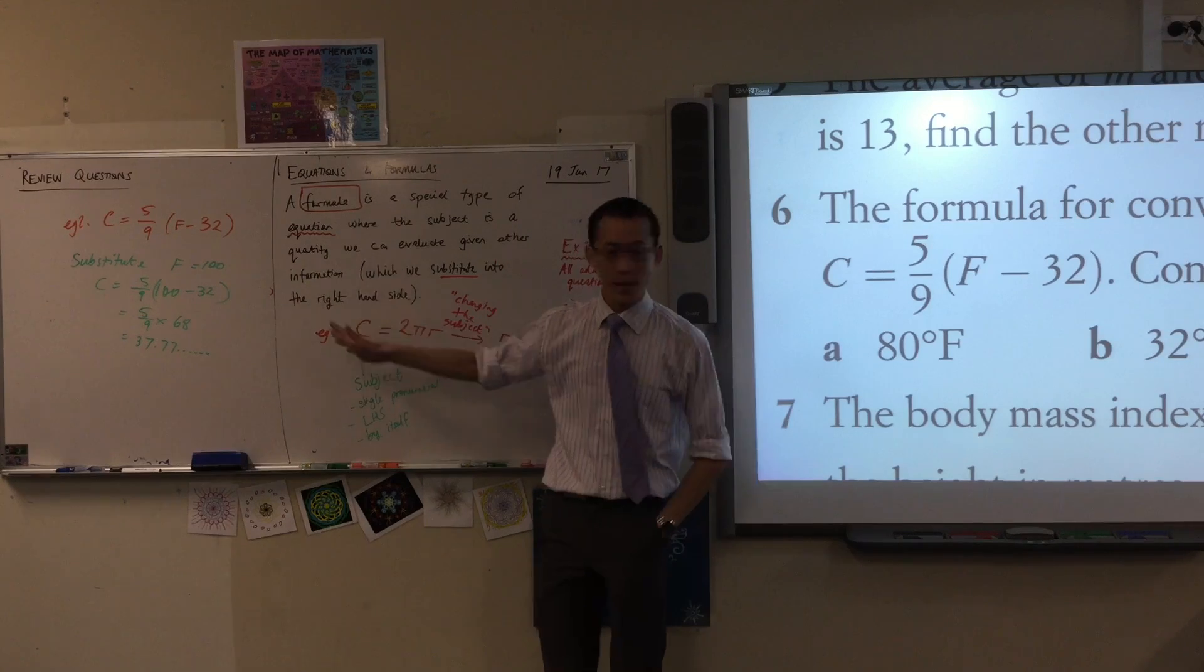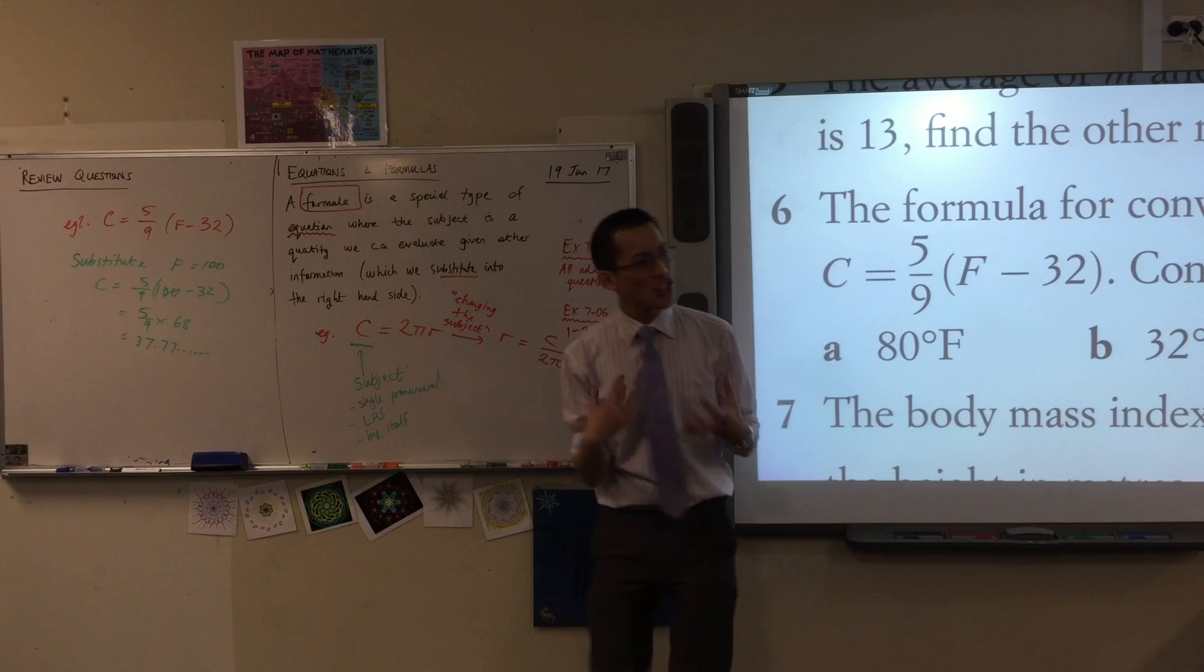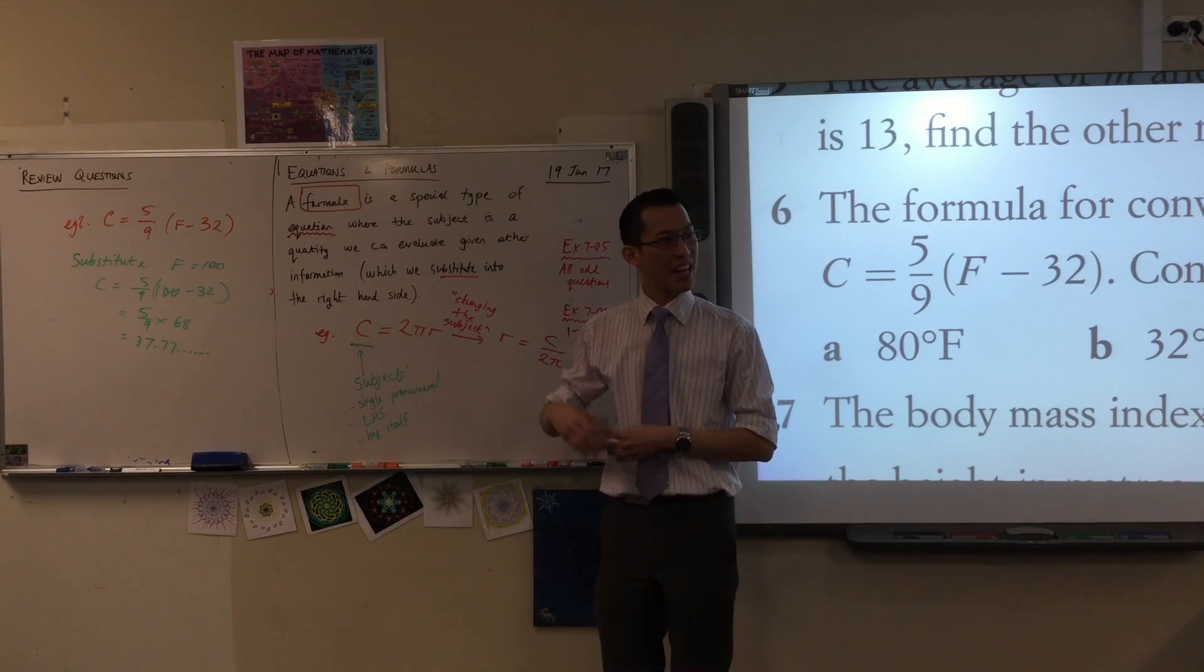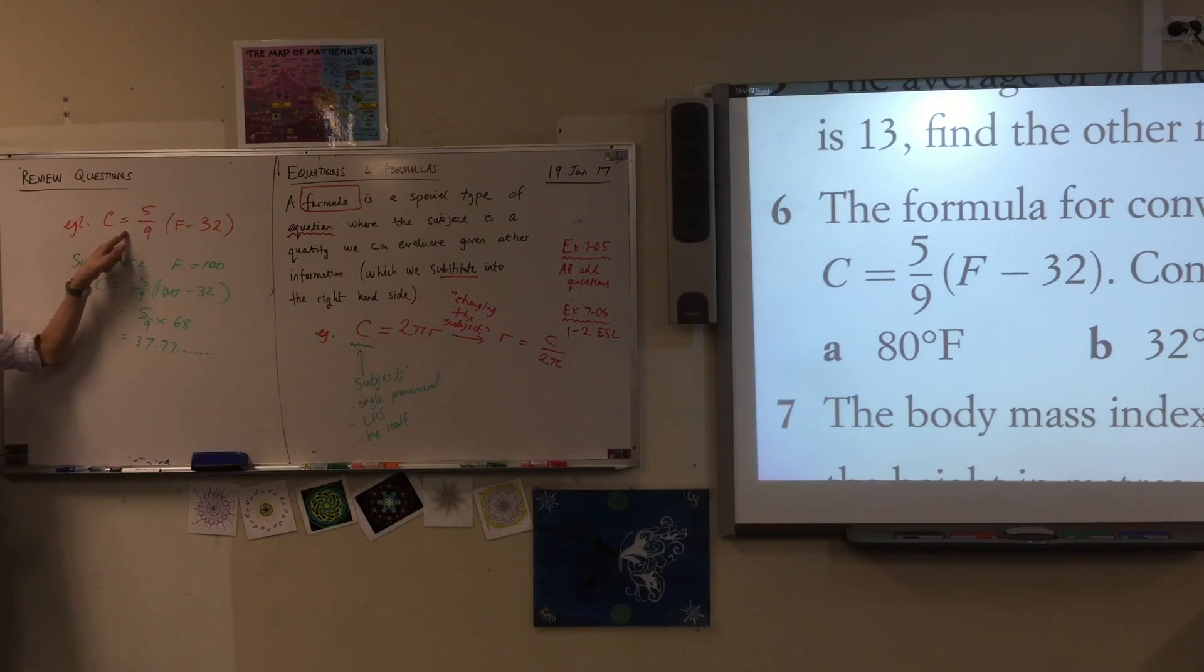So this is a formula for degrees Celsius given degrees Fahrenheit. Can we change the subject? What would we have to do to change the subject so that F was the subject? What would be something we could do to start here? I want a suggestion. Yeah.